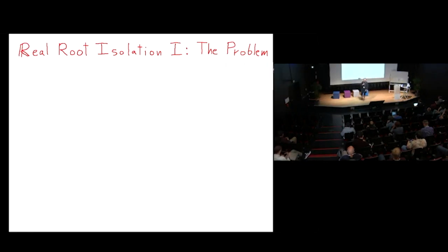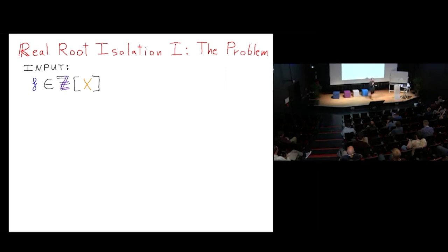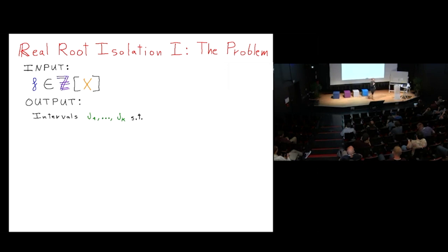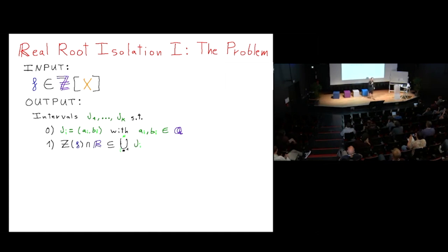Let's go with the problem: real root isolation. We have some integer polynomial and we want to isolate its real roots. We find intervals j1 through jk with rational endpoints such that every real zero is contained in the union of the intervals, and each interval contains exactly one real root.